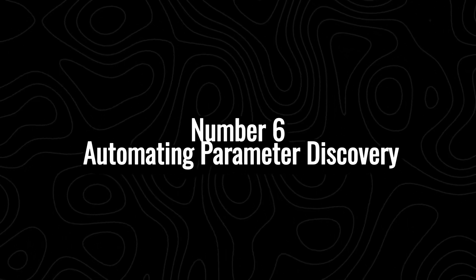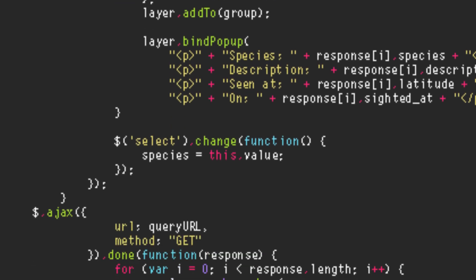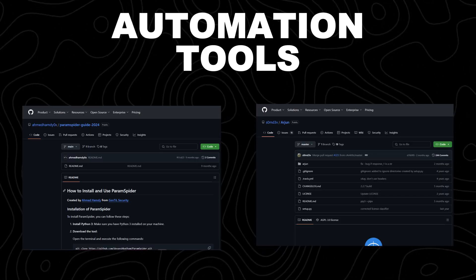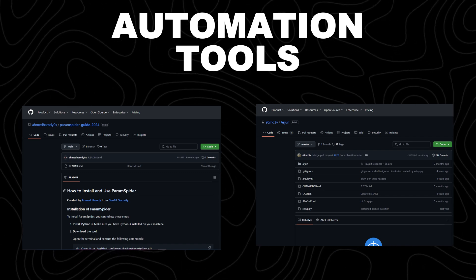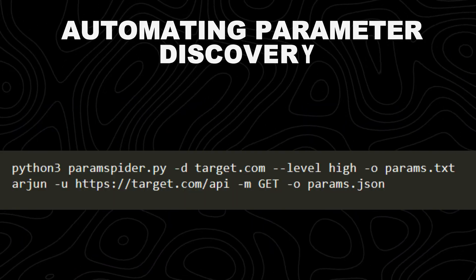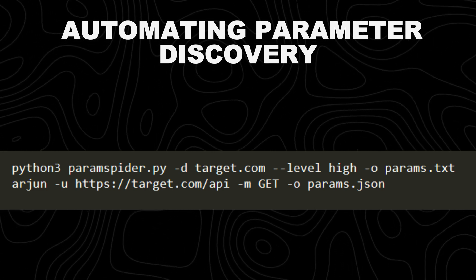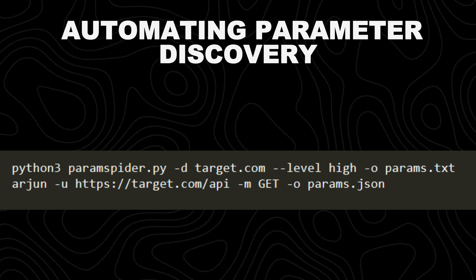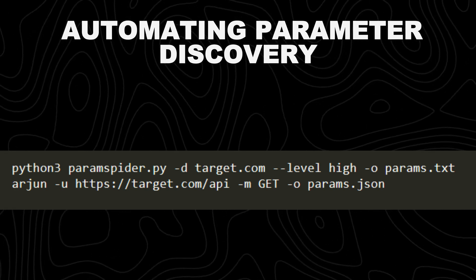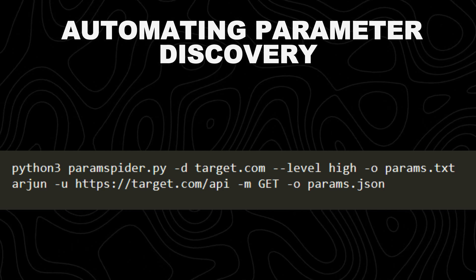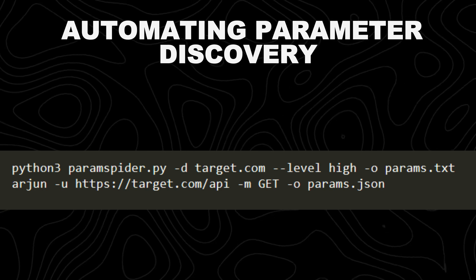Number 6: automating parameter discovery. Hidden parameters in URLs can lead to vulnerabilities like SQL injection, XSS, open redirects, and IDOR. Instead of manually guessing parameters, automation tools like ParamSpider and Arjun can quickly discover them, saving time and exposing attack surfaces faster. The Python3 command automates hidden parameter discovery using ParamSpider, a tool designed to extract GET parameters from a target website for security testing. The second command automates parameter discovery for API endpoints using Arjun, a tool that brute forces GET and POST parameters.